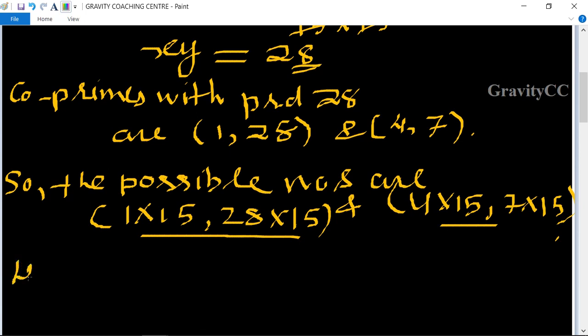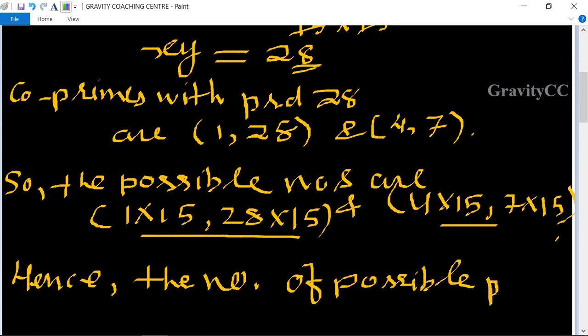Hence, the number of possible pairs is 2, which is the required answer.